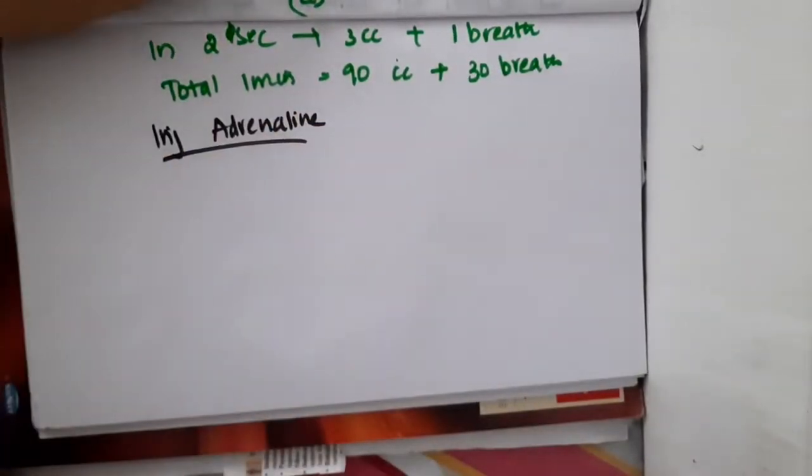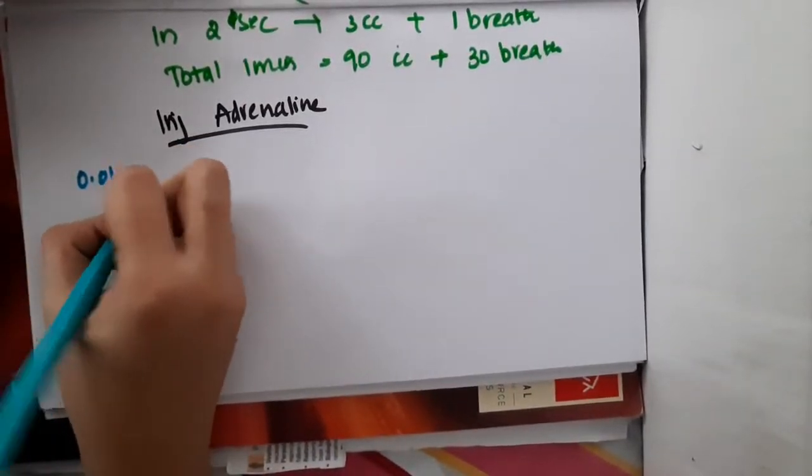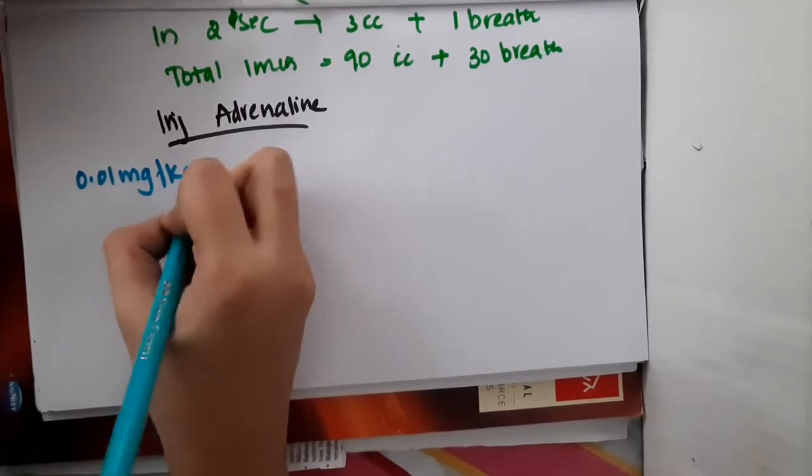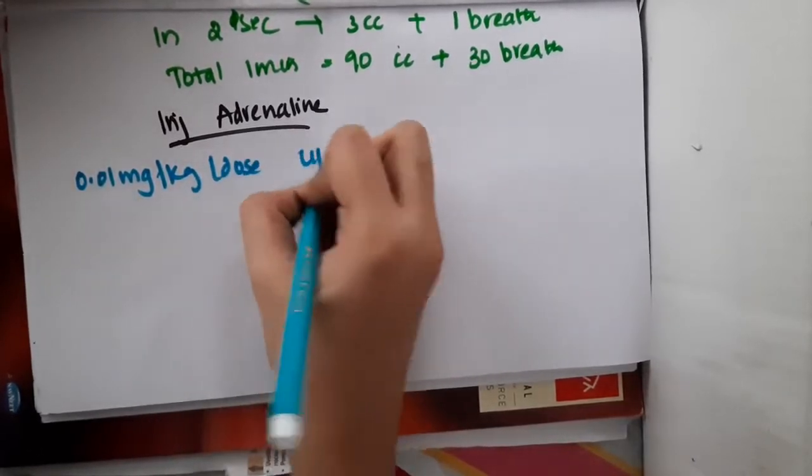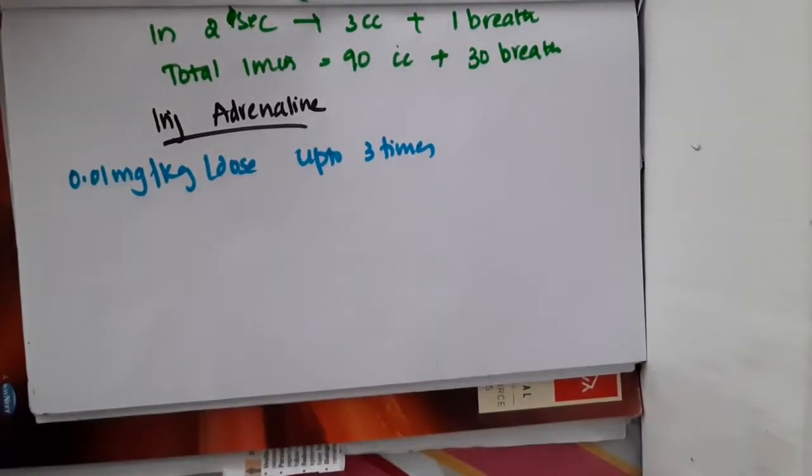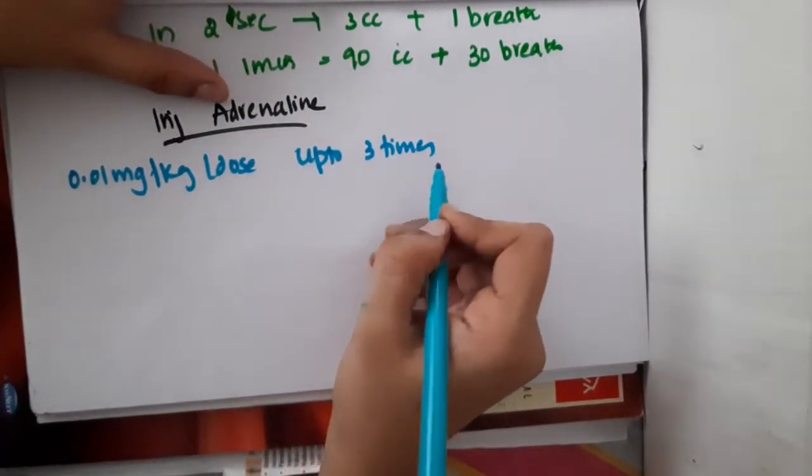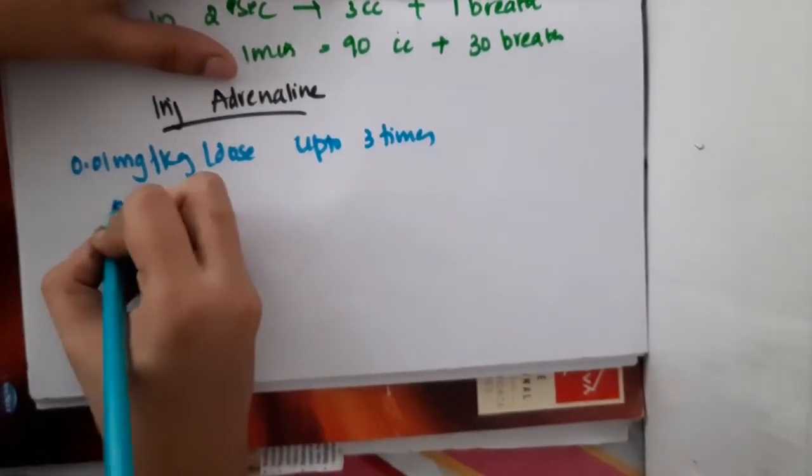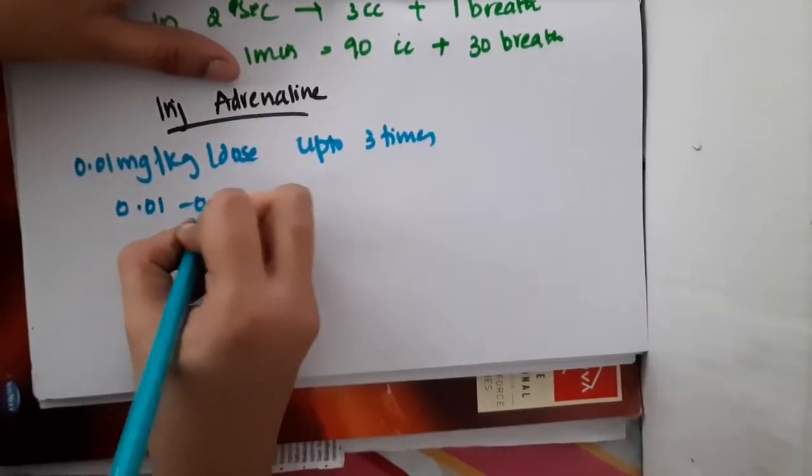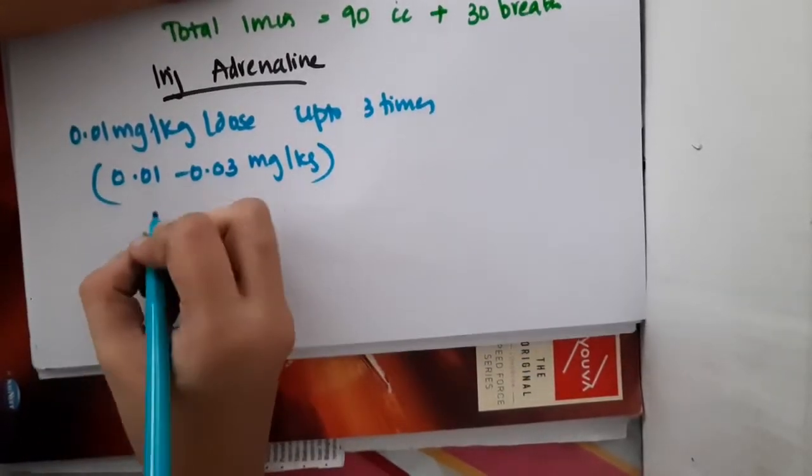Hello friends, let us now learn some important points about Adrenaline. Adrenaline is given in the dosage of 0.01 mg per kg per dose up to 3 times. That means 0.01 to 0.03 mg per kg can be given if they ask the range.